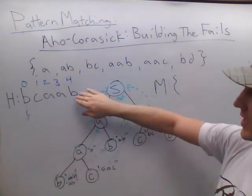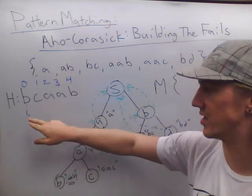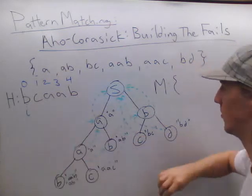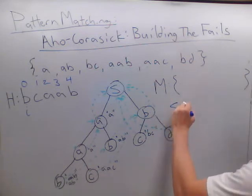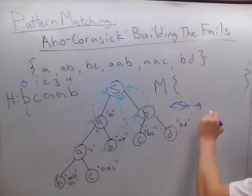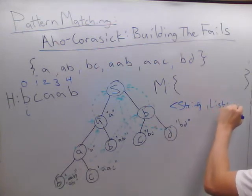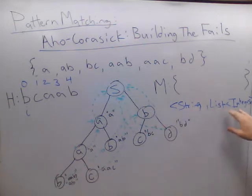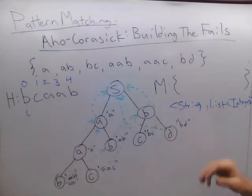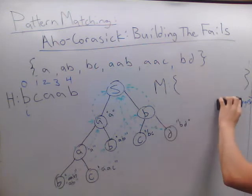How we're going to do that is we're going to have an index i, which is the current character inside the haystack, and we're going to have a hash table of matches. It's going to have a string as the key and a list of integers as the value. This list of integers is going to represent every index where we can find that word inside our haystack.